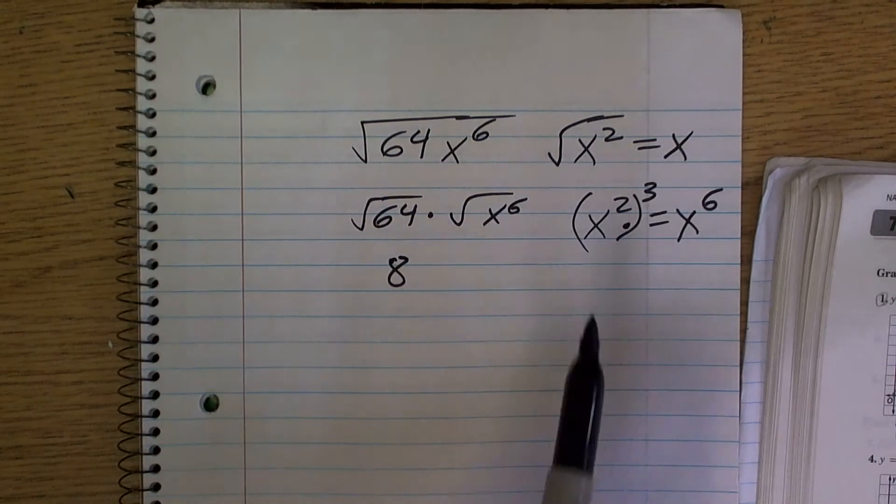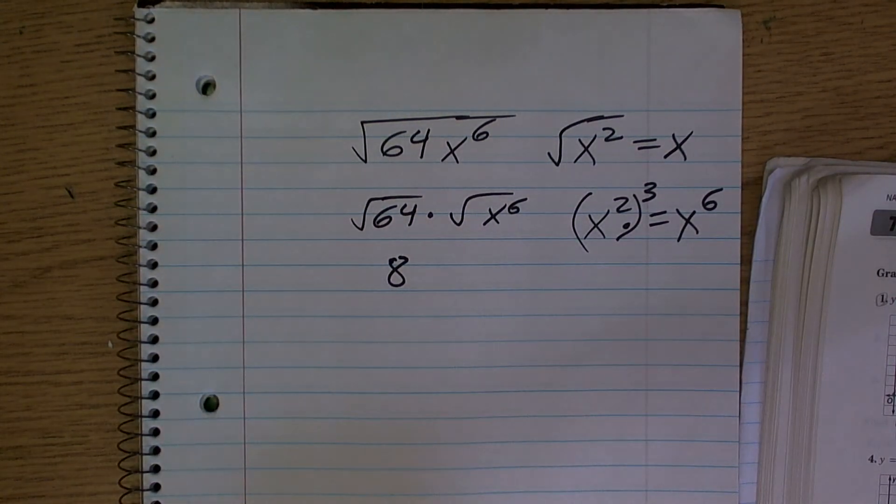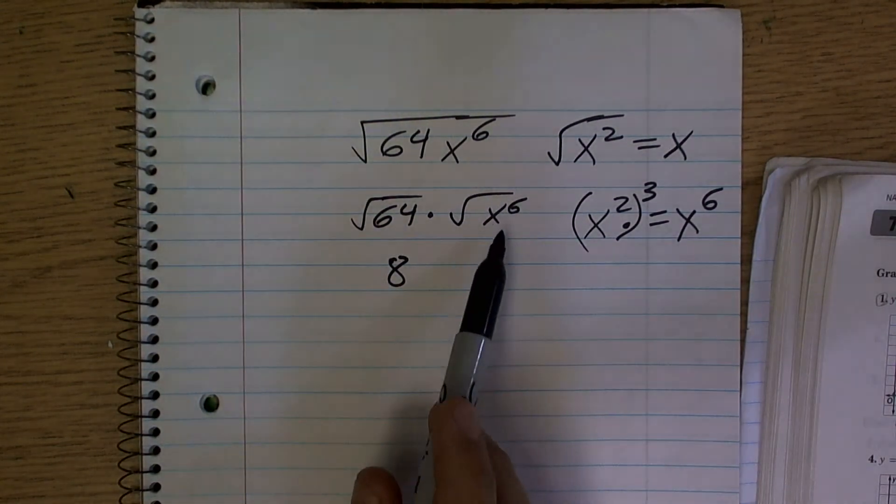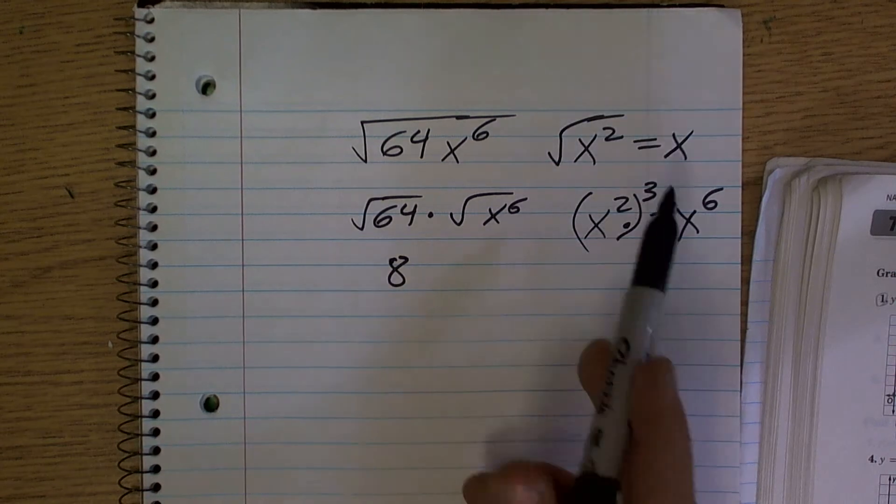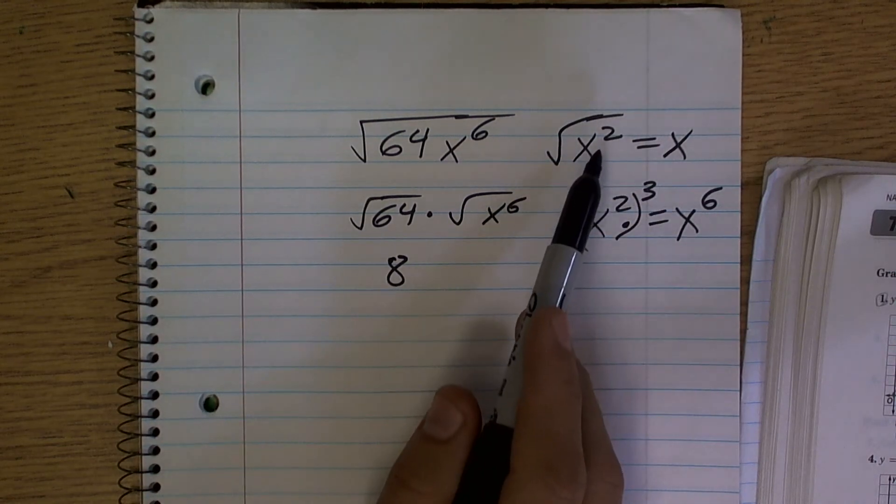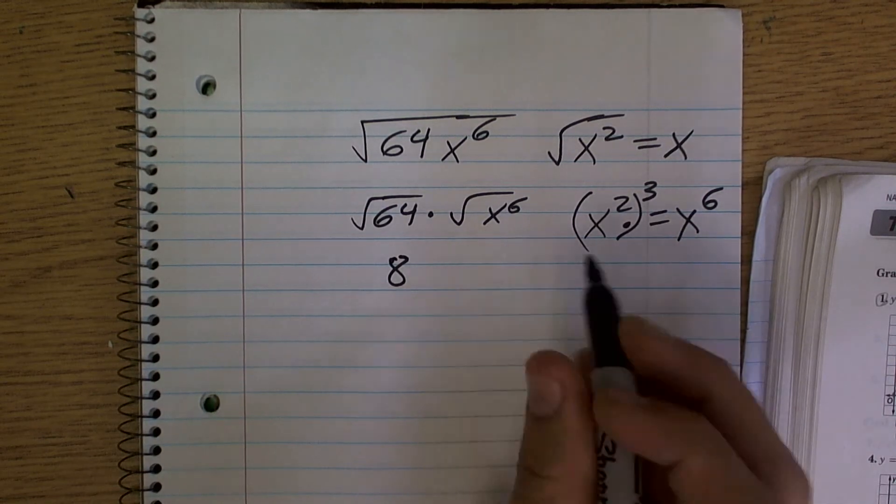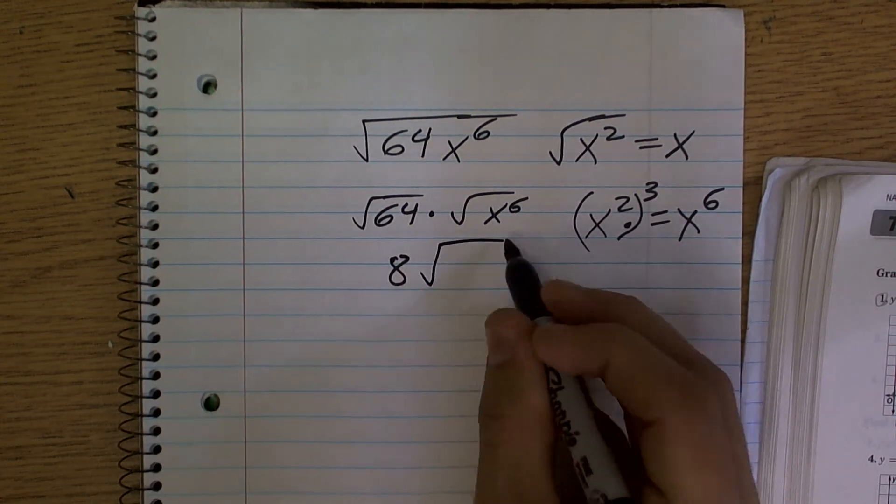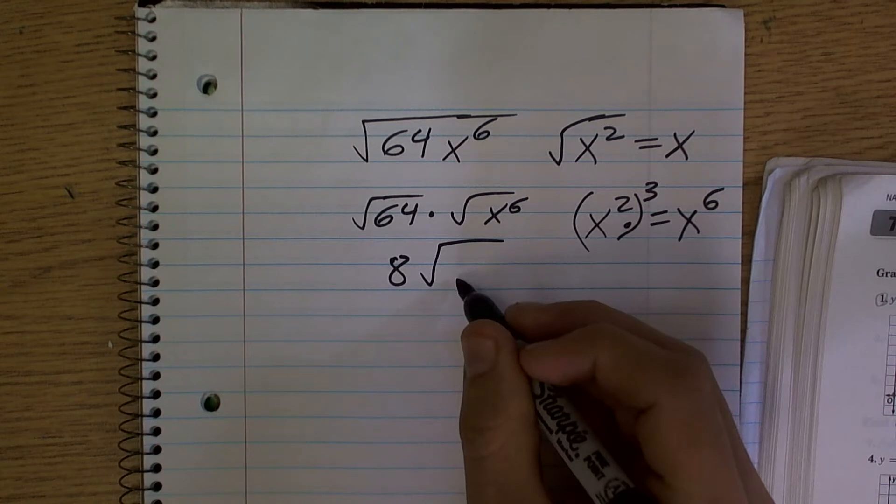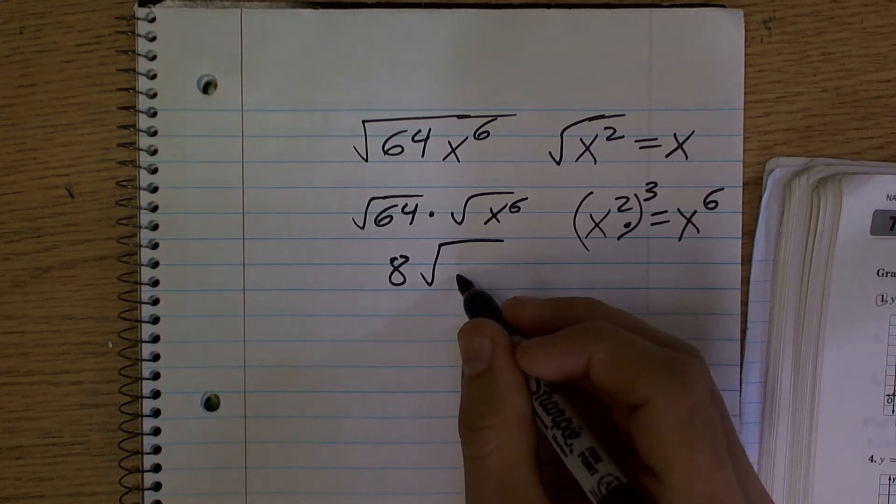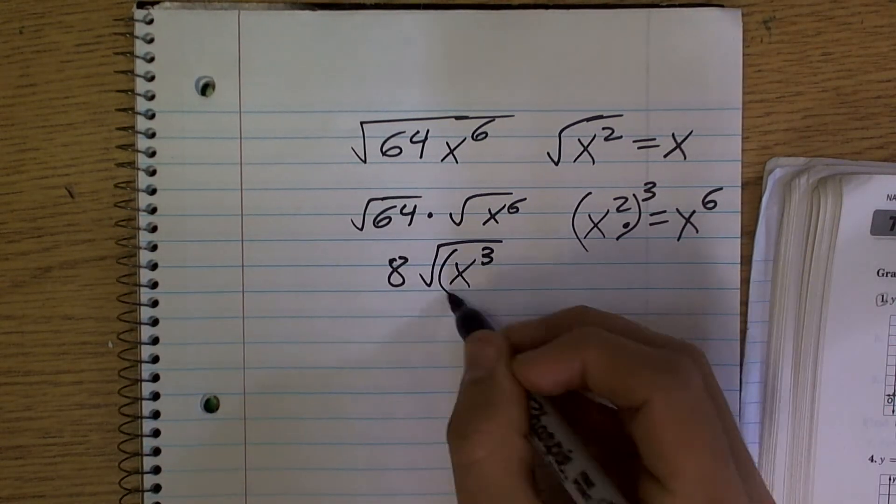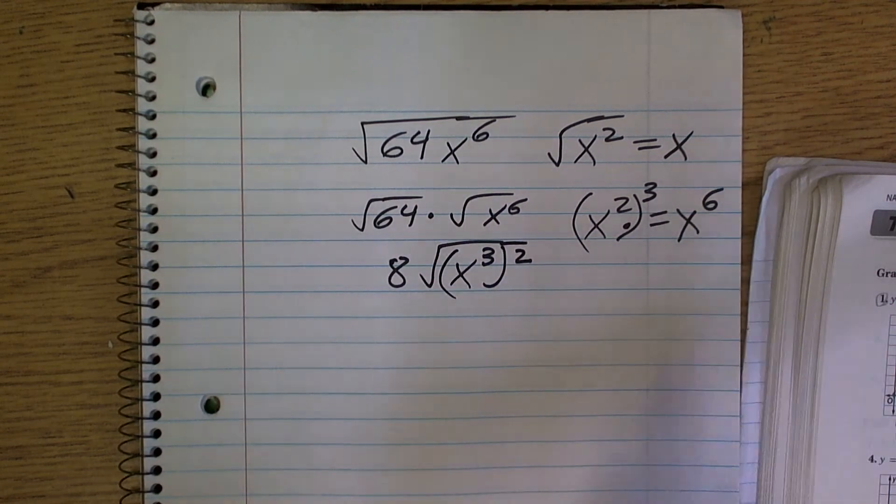Okay, those are rules of exponents. So what I'm going to do is, I'm going to see how I can rewrite x to the 6th with a square root. So what I'm going to do is, if I can rewrite this, if we can rewrite this as x cubed squared...